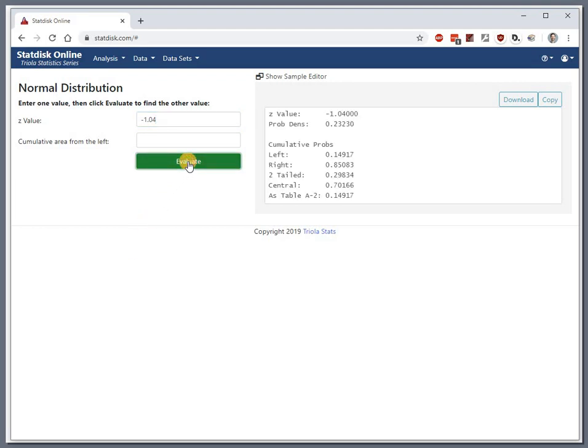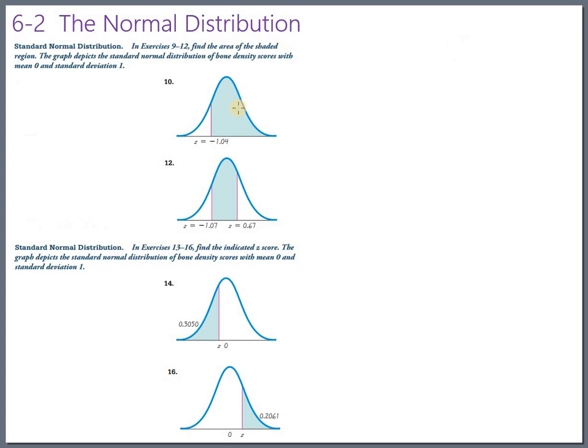And we particularly wanted the cumulative probability to the right of that. Another thing to notice, which I didn't point out, is they told you to round to four decimal places. So we'll go 0.8508. So this area right here, that's shaded in, is 0.8508. So about 85% of bone density scores will be negative 1.04 or greater.